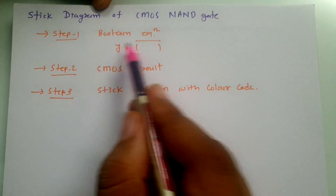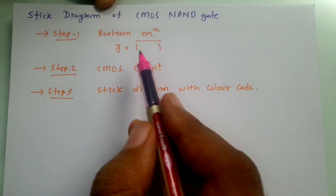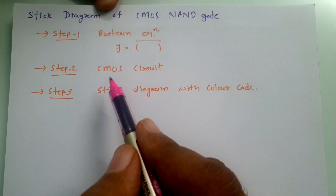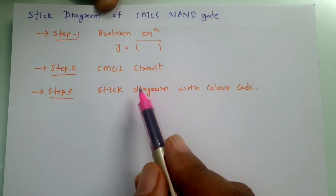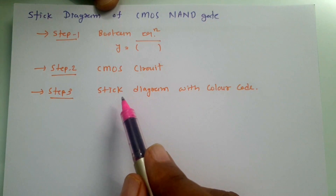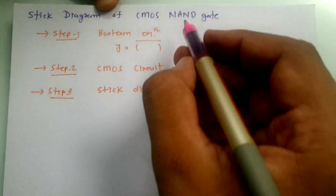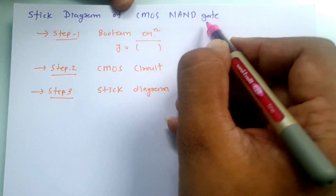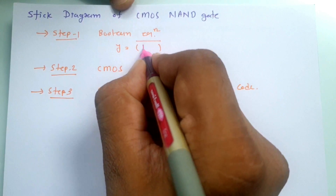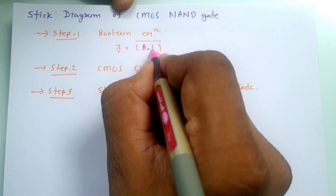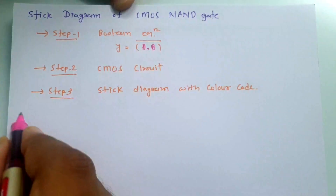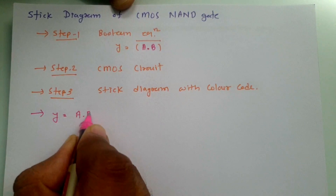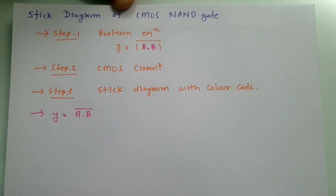So these are the three steps we need to follow: first the Boolean equation, then form the CMOS circuit, and then with color code we can have the stick diagram. Here we are dealing with CMOS NAND operation, so if we have two inputs A and B, then A dot B whole bar is our Boolean equation.